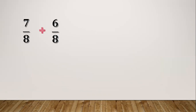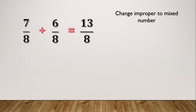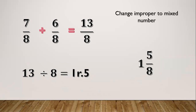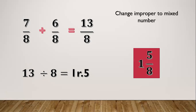Another example: seven eighths plus six eighths. Seven plus six equals thirteen. Copy the denominator which is eight, giving thirteen eighths. Same process — change the improper fraction to a mixed number. Thirteen divided by eight equals one remainder five. Five is our numerator and one is our whole number. Copy the denominator which is eight, so our final answer is one and five eighths.